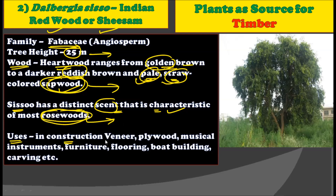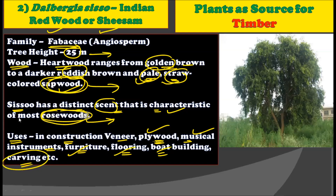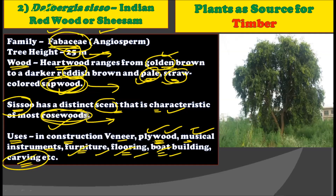The timber of Dalbergia sissoo is used in construction, for creating plywoods, musical instruments, furniture, flooring, board building, and carving. It is the second plant for timber production, belonging to the angiosperm family Fabaceae, growing up to 25 meters, with a golden brown to reddish hardwood and pale to straw-colored sapwood, distinguished by its characteristic rosewood scent.